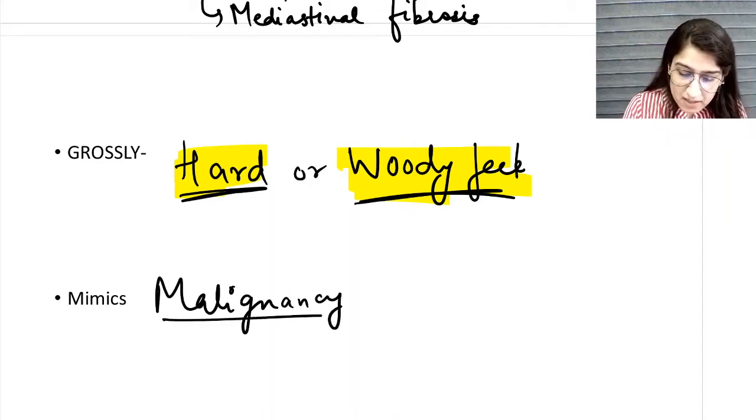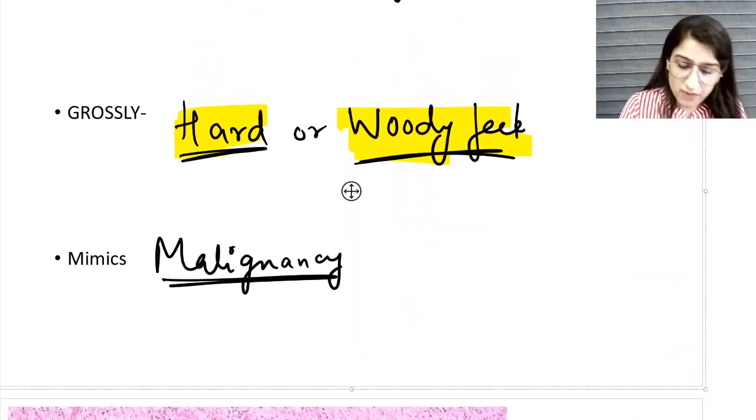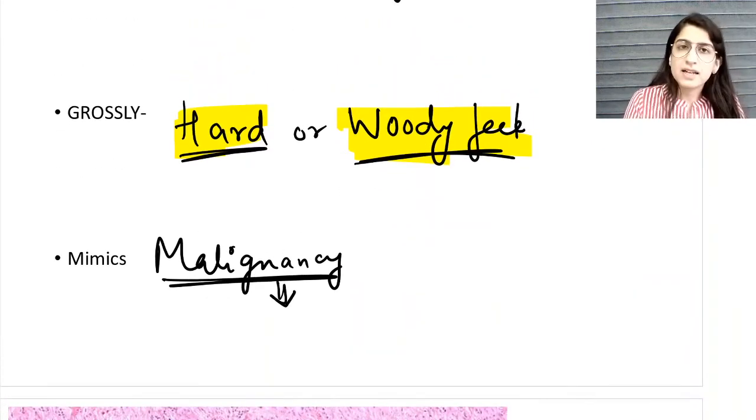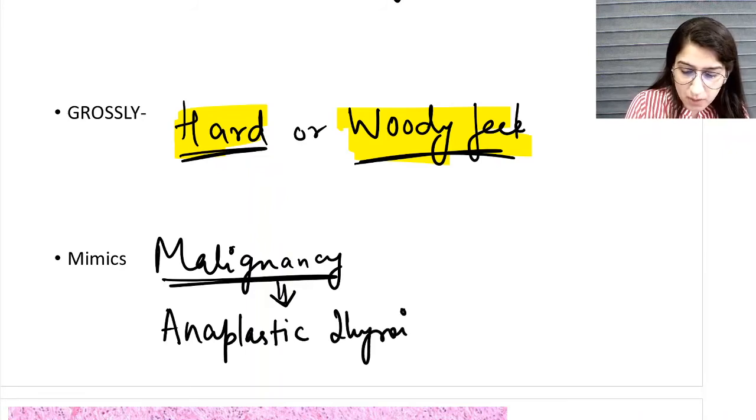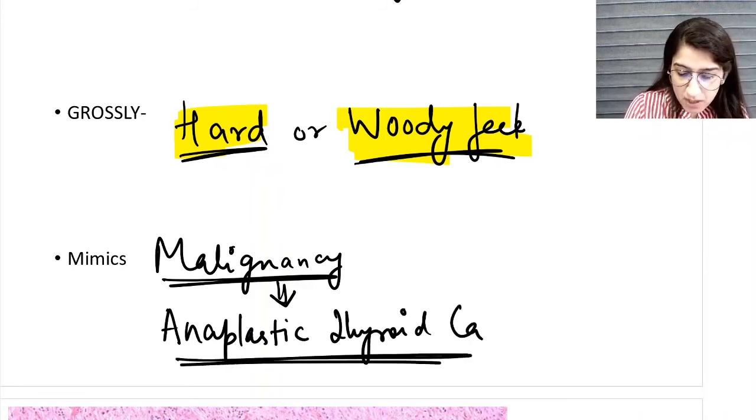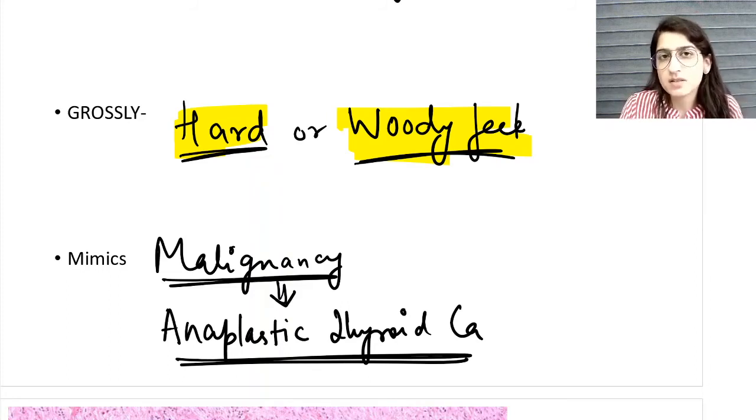it mimics malignancy. Now, which malignancy? This is a very important MCQ. The malignancy which it mimics is anaplastic thyroid carcinoma. That is why, in my next session on thyroid disorders, when I tell you about anaplastic thyroid carcinoma, one of the differential diagnoses of anaplastic thyroid carcinoma